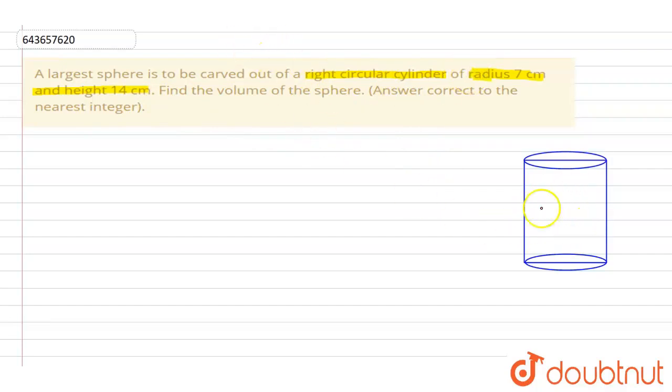Let's consider this right circular cylinder with radius 7 cm and height 14 cm. By observing this figure, we can conclude that radius of the sphere will be 7 cm.